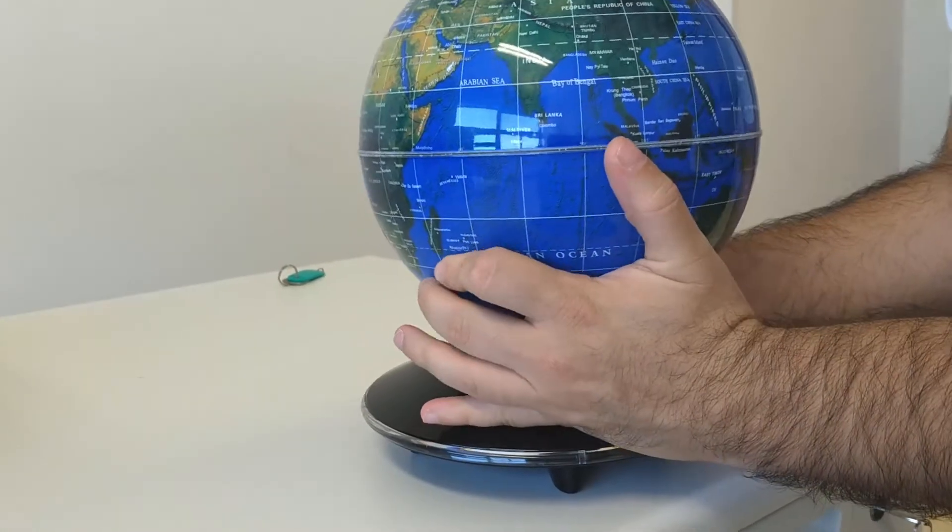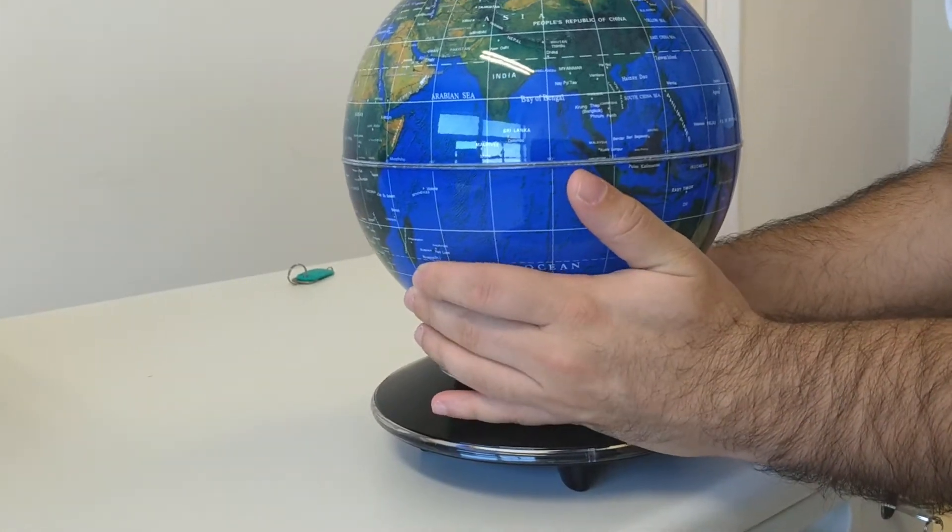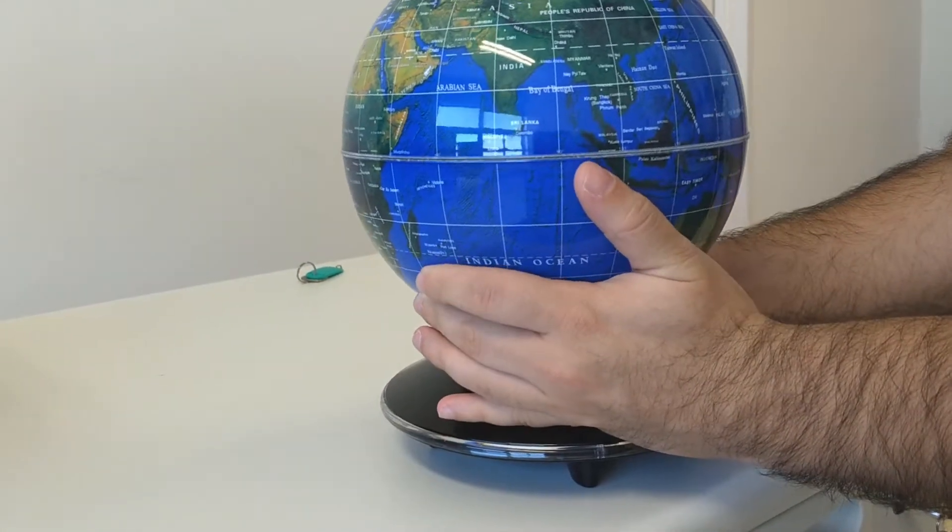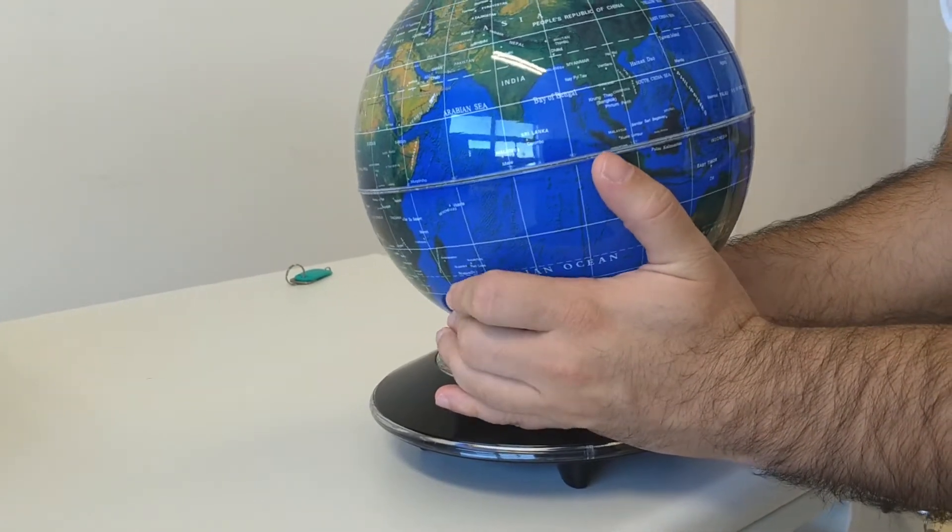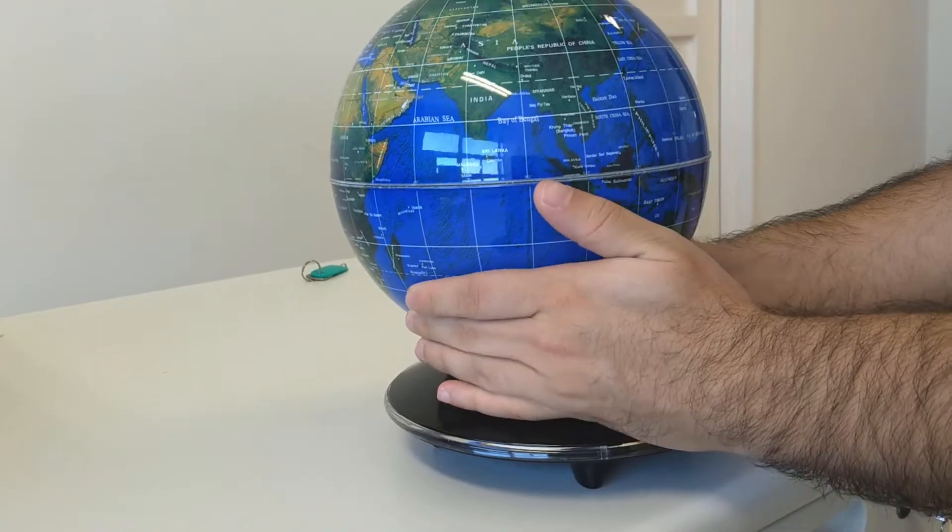As we can see, while the device is turned off, it is impossible to stabilize the globe, because there are unstable magnetic forces between permanent magnets in the base and in the globe.